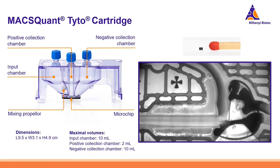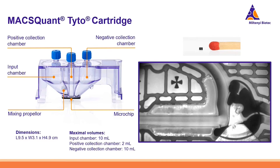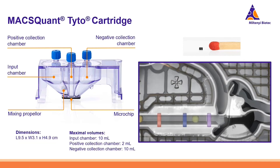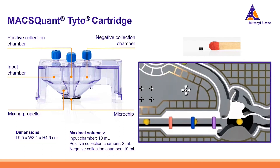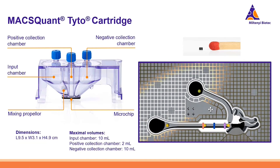There is a valve that can move really fast — up to 30,000 times per second. When the sorting process is active, the target cells in this example are sorted into the positive collection chamber.